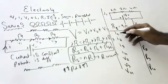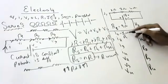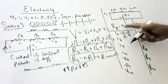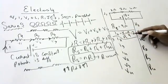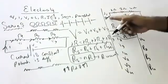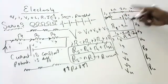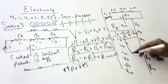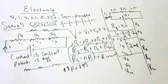From Ohm's law, I = V by R. V is 18, R is 9, so I = 2 amperes. 2 amperes of current will flow in the circuit. Current across 2 ohms is also 2 amperes, current across 3 ohms is also 2 amperes, current across 4 ohms is also 2 amperes — because in series, current is constant.